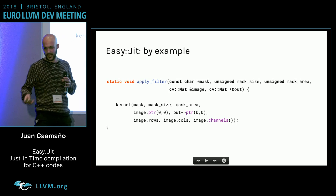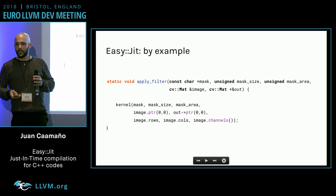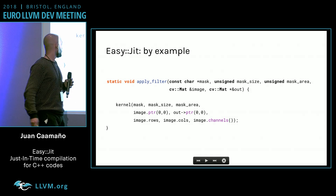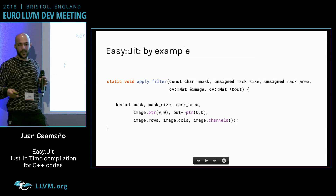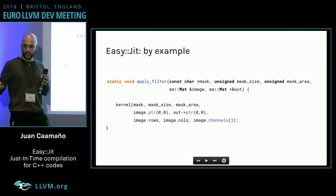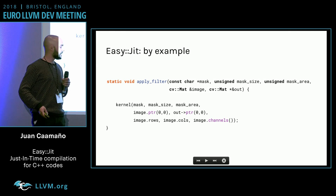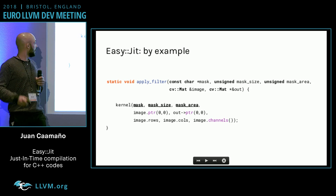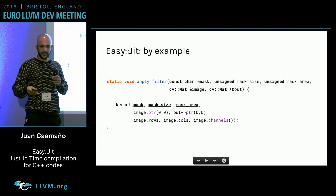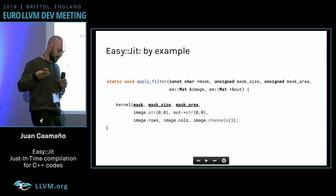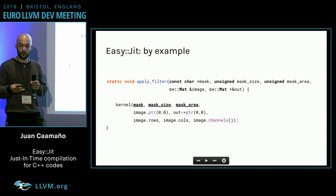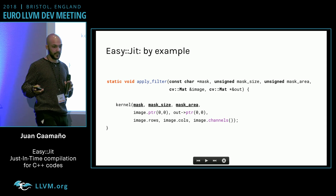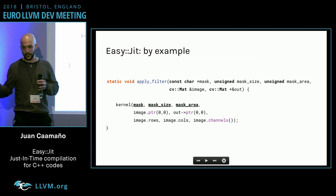Let's see an example to get an idea of what the library is about. Imagine we have a function — an image kernel — that we're going to apply on a video stream. The mask, the mask area, and the mask size parameters are controlled by the user, and they may change at runtime depending on user input.